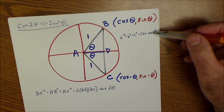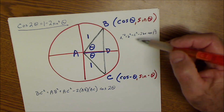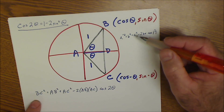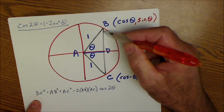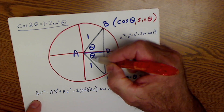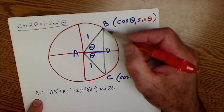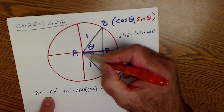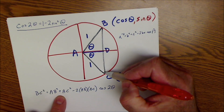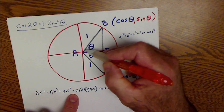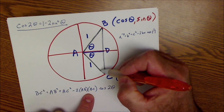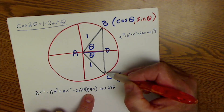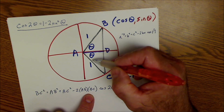I did a derivation of where the law of cosines comes from in a previous video, just so you know the stuff isn't made up. So I'm going to use the law of cosines and say this side squared, bc², is equal to this side squared plus this side squared, minus 2 times this side times this side times cosine of the angle opposite — so cosine of 2θ.